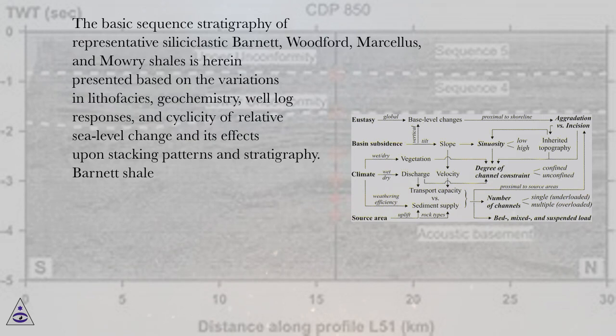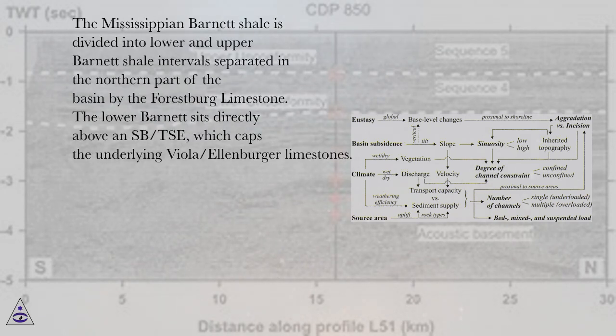Barnett shale. The Mississippian Barnett shale is divided into lower and upper Barnett shale intervals separated in the northern part of the basin by the Forestburg Limestone. The lower Barnett sits directly above an SB-TSE, which caps the underlying Viola-Ellenberger limestones.